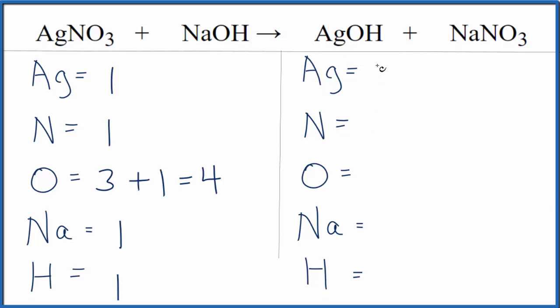Over on the product side we have one Ag, we have one nitrogen. Oxygens we have the one here and again don't forget we have three right here so we have four. One sodium and then one hydrogen and it looks like this equation is actually already balanced.